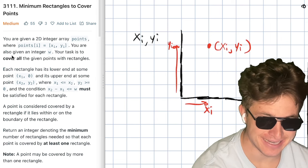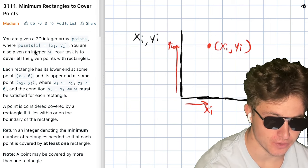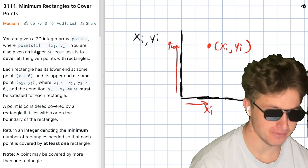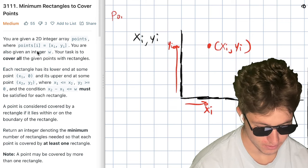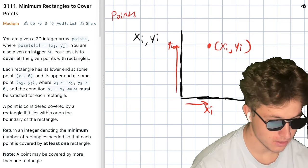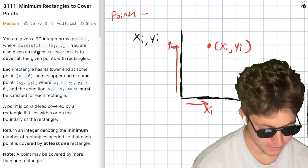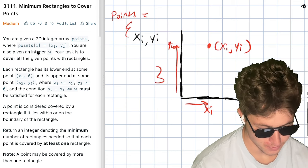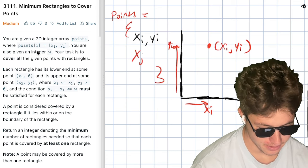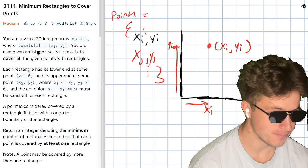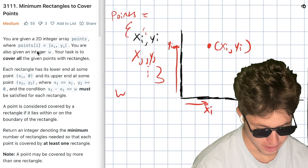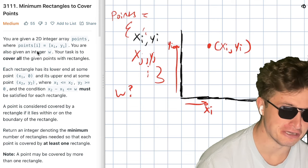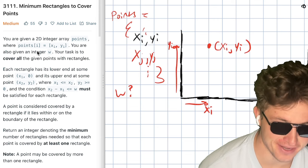You are also given an integer W. So you're given a bunch of points in this array — there's going to be multiple points like X_j, Y_j and so on. You're also given some value W. What does this value W do? I guess we're going to figure that out together.